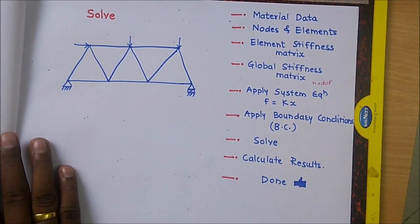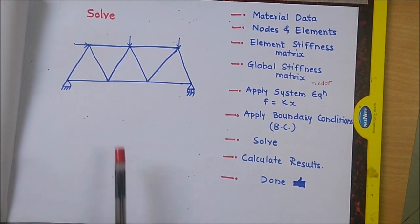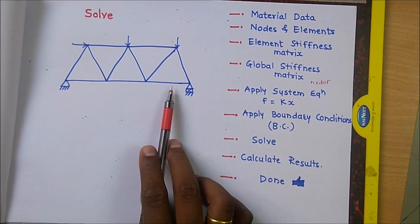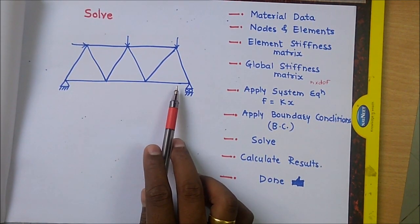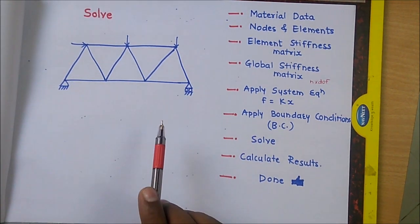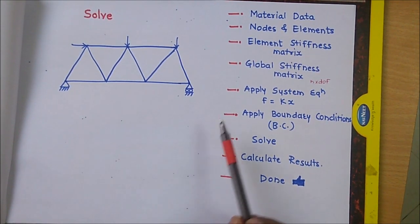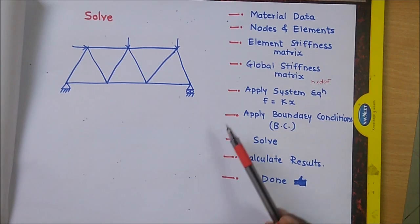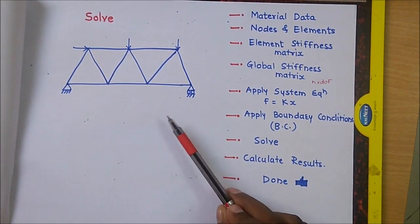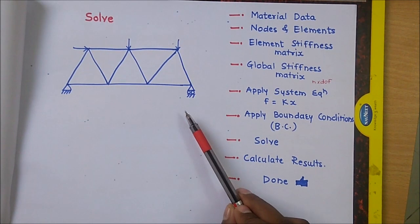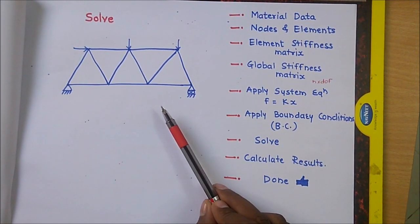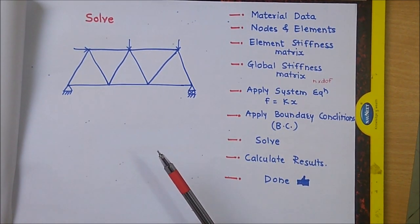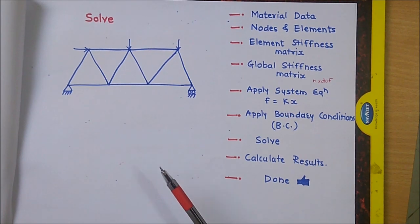Here is one general problem we are considering — a truss problem. In this there will be n number of nodes and m number of elements. There are basically three types of methods we can use to solve this problem. The first one is the analytical method. The second one is to create a computer code. And the third one is directly ANSYS, where we can do analysis and get the results.